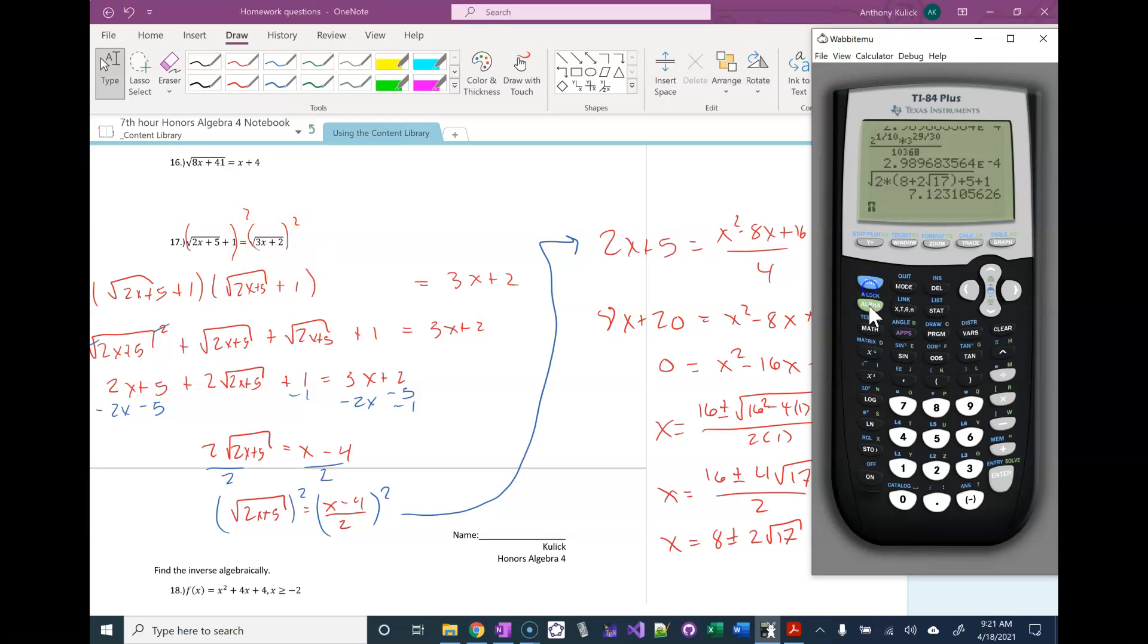Now I'm going to do the same thing plugging into the right-hand side. And I have 3 times 8 plus 2 square root of 17 plus 2. And that gives me the same answer so that when we're adding, that works.